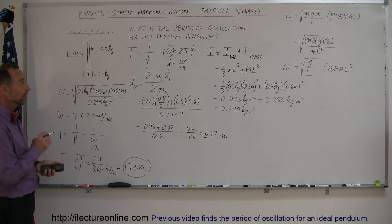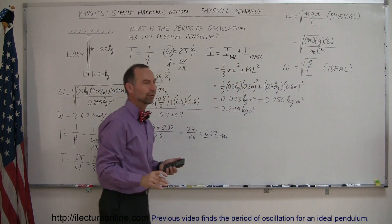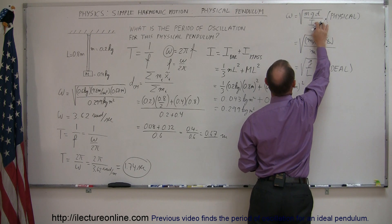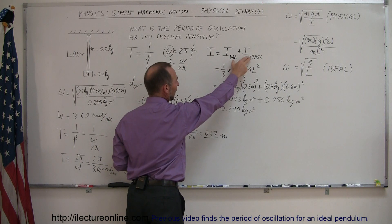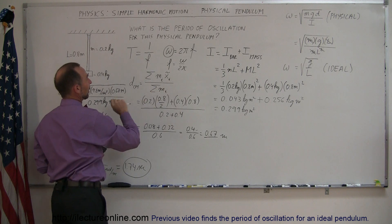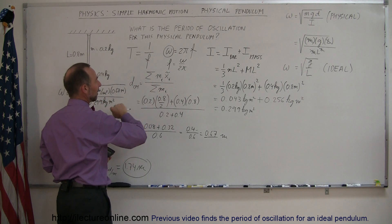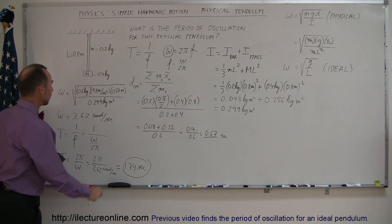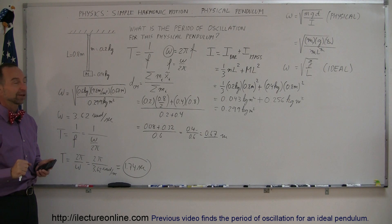To recap: we have a physical pendulum, not an ideal one. For an ideal pendulum, we simply take the square root of G divided by L. For a physical pendulum, we need the total mass, the distance from the pivot to the center of mass, and the moment of inertia — computed as the sum of the bar's moment of inertia plus the end mass's moment of inertia. We also calculate the center of mass distance by summing each component's mass times its center of mass distance, divided by total mass. Plug those values into the equation and get the period.